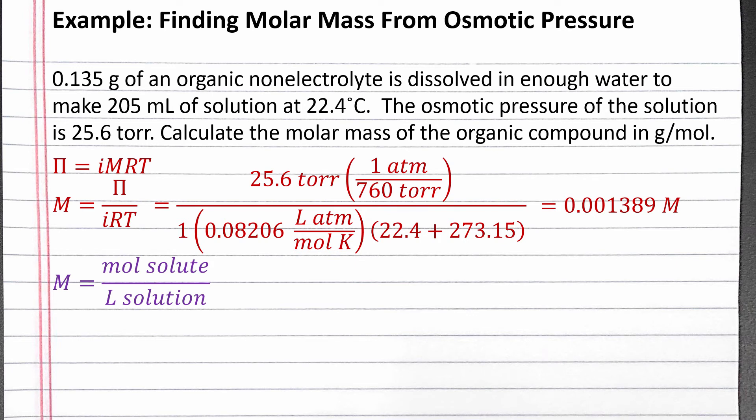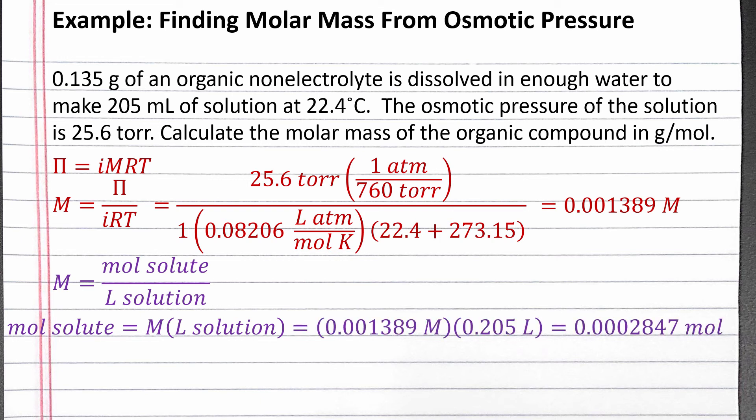Next, we can use the equation for molarity to solve for moles of solute. Moles of solute equals molarity times liters of solution. We just calculated the molarity, and we can convert 205 mL of solution to 0.205 liters of solution. We should have 0.0002847 moles of solute.